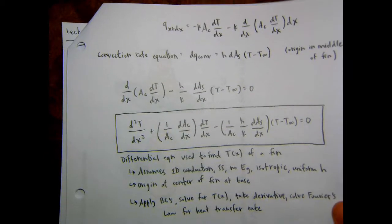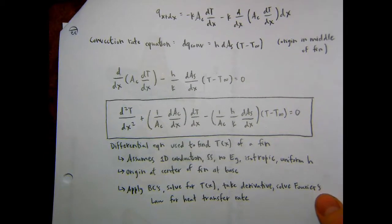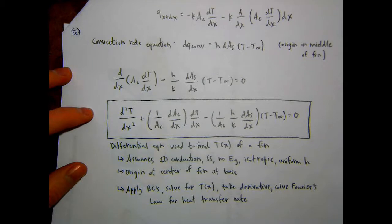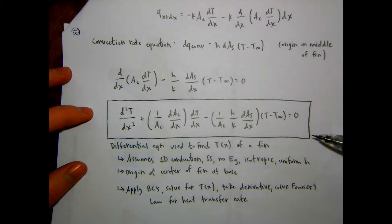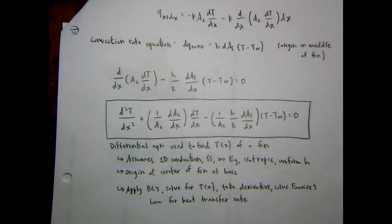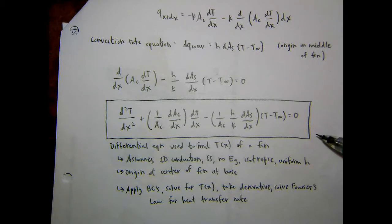We left off last time having just derived this large equation for the temperature distribution within a fin. This is the differential equation we derived by applying an energy balance to a differential element on a fin, using assumptions of one-dimensional heat transfer, steady state, no energy generation, and isotropic materials. We noted a distinction between this equation and the heat diffusion equation, which does not have those restrictions built in.